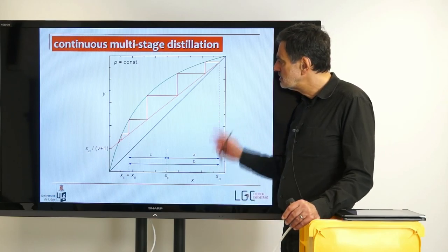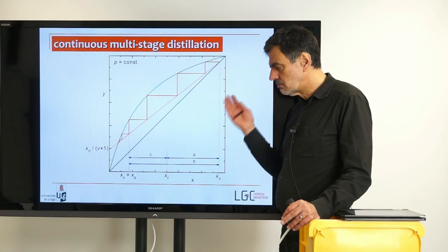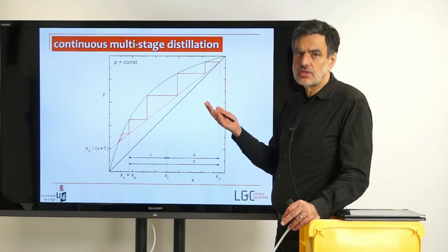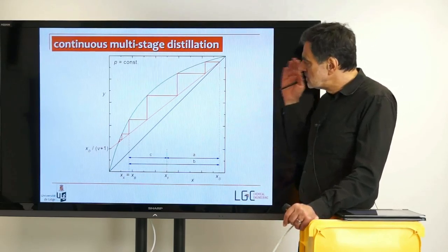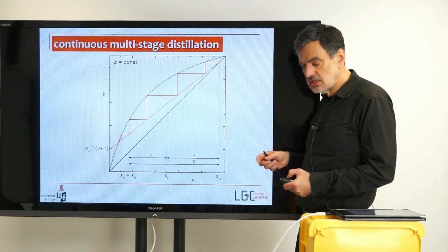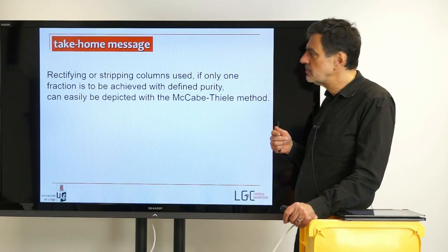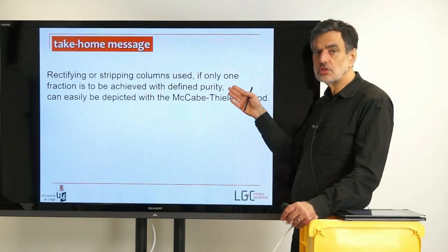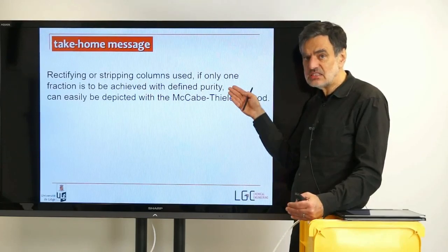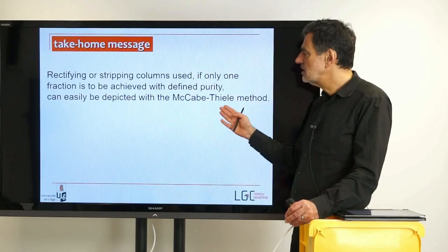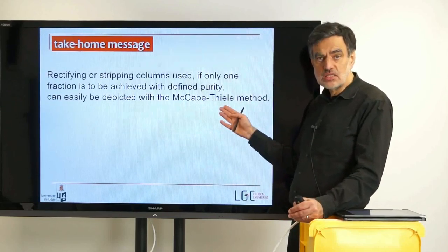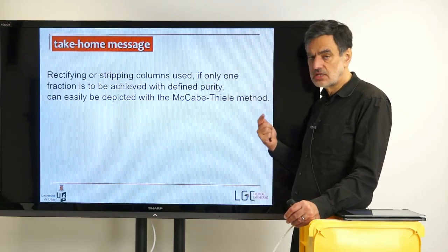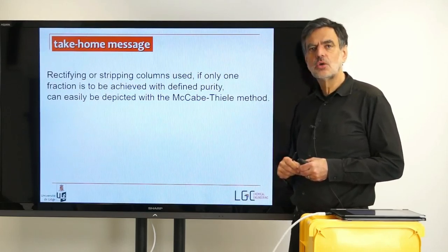Such rectifying columns are more frequent than stripping columns — for example, if you have a reactor and want to remove a light-boiling component to decrease product inhibition. In summary: rectifying and stripping columns are used when only one fraction needs to be achieved with a defined purity, or for easy separations. The process can be depicted in the McCabe-Thiele diagram using the lever rule and the corresponding balance line. Thank you for your time and I hope to see you in the next video.